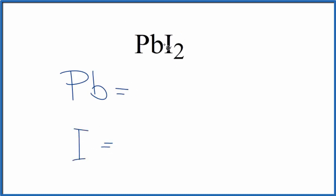For Pb, there's nothing written after the Pb, so we assume we have one lead atom. For iodine, the subscript's 2.